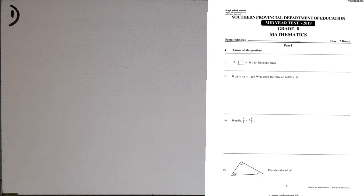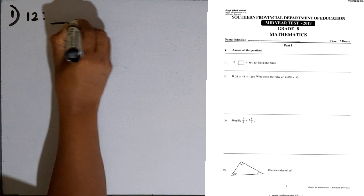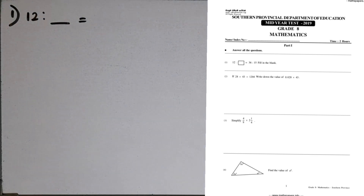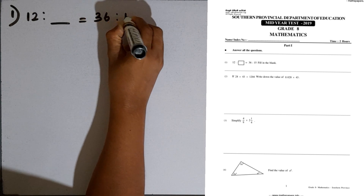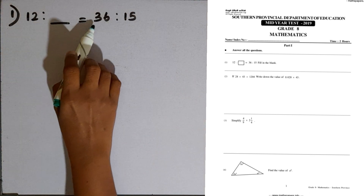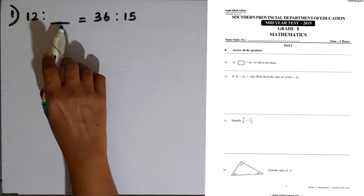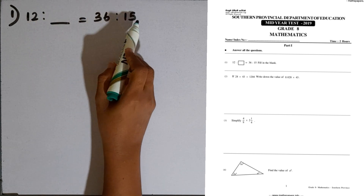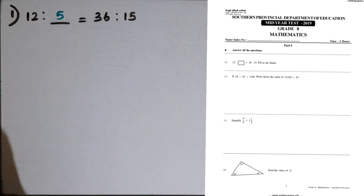First question: we are given this ratio 12 to blank equals 36 to 15. Here, 12 is multiplied by 3 to obtain 36. So, this number should also be multiplied by 3 to obtain 15. The answer is 5, because 5 multiplied by 3 is 15.